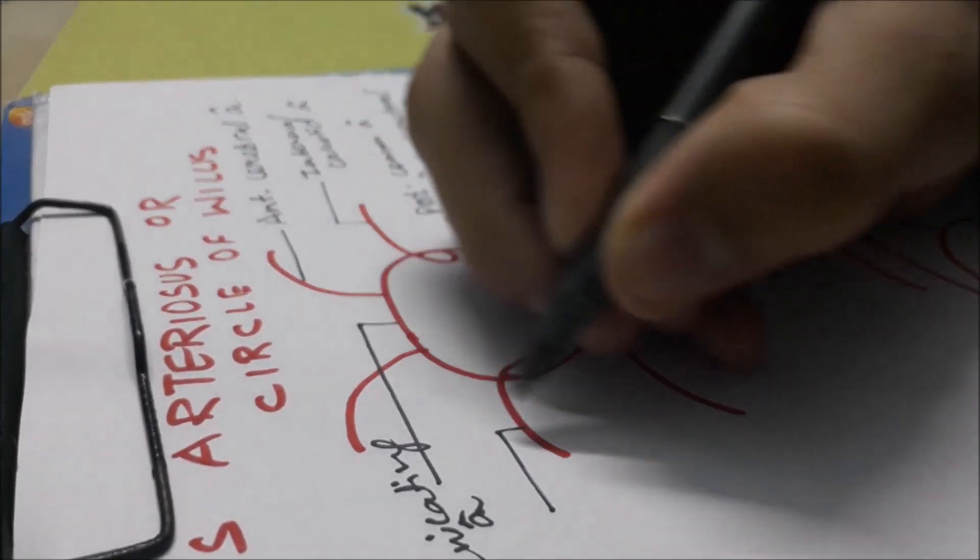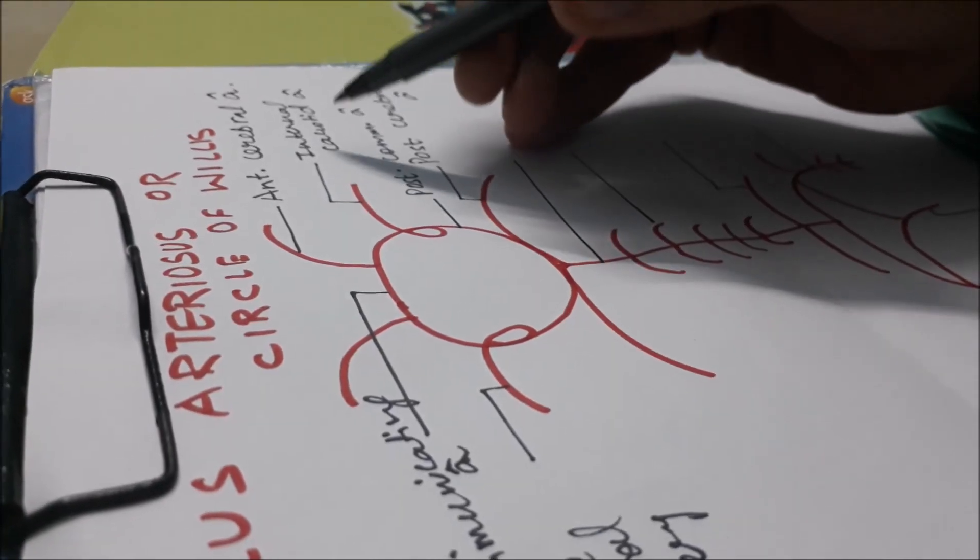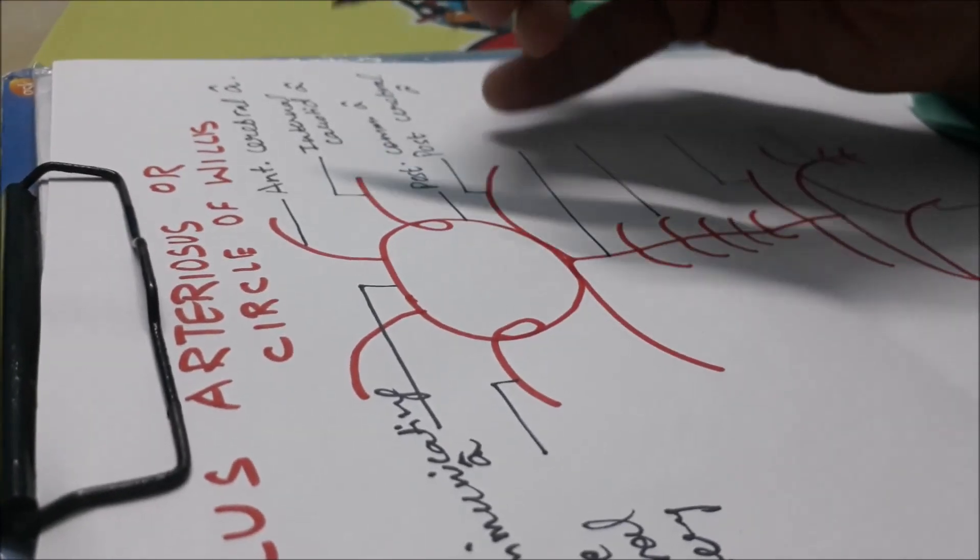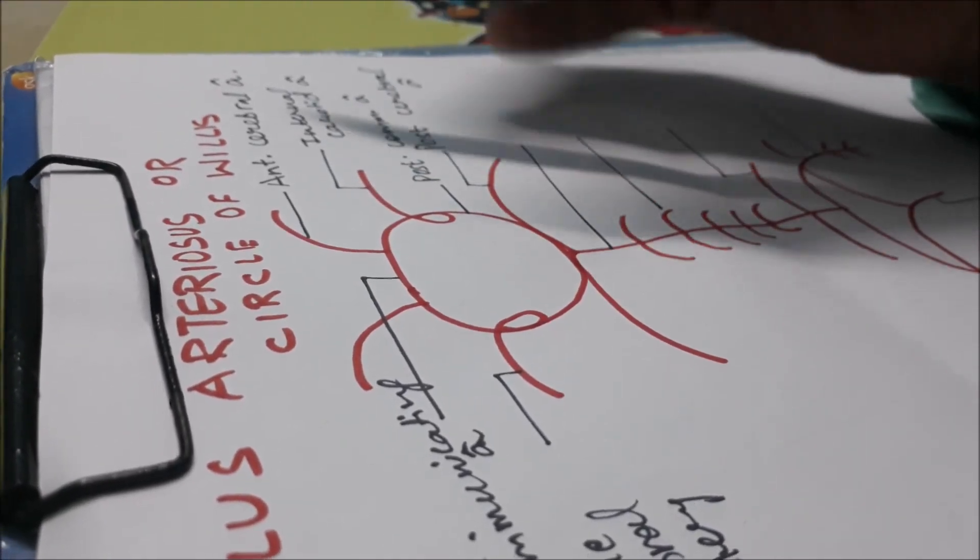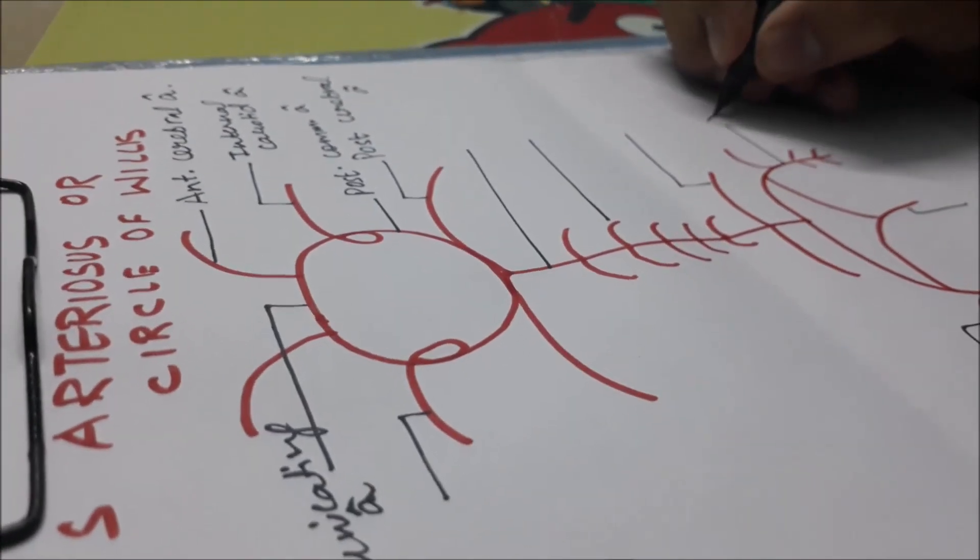All the arteries that we're seeing here are the anterior branches of the internal carotid artery, and all the things we're seeing here are the branches of the vertebral artery.